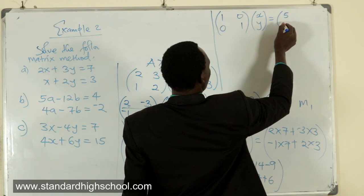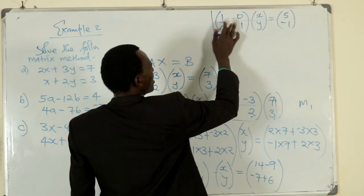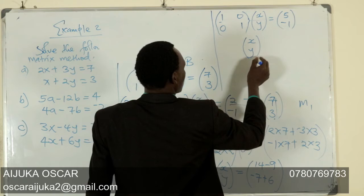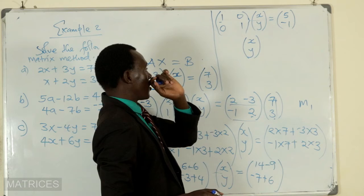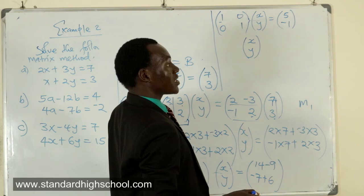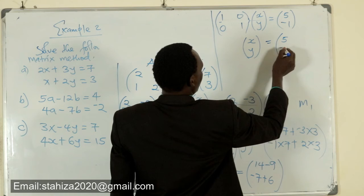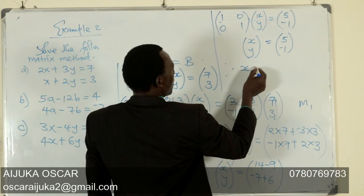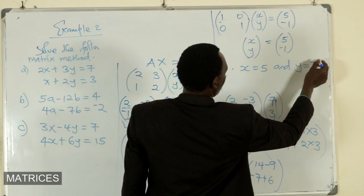When we carry out the matrix multiplication here, this is an identity matrix times a matrix. You get that very matrix, so we shall obtain xy. This is only true if it is an identity matrix, that is if the elements in the major diagonal are 1s and the other elements are 0s. This is equal to 5, negative 1, which means that upon equating these two matrices, x is 5 and y is negative 1 as the solution to our problem.